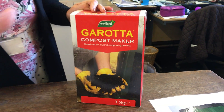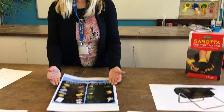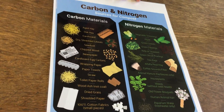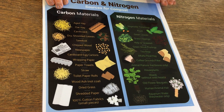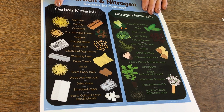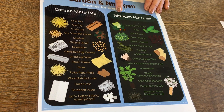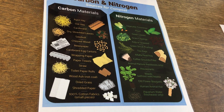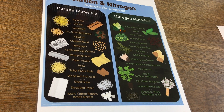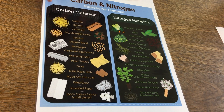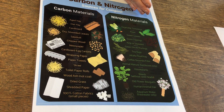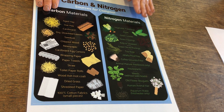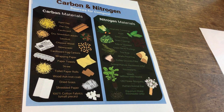That's our equipment. Now we need our ingredients, which we can split into two categories: browns and greens. Browns are very high in carbon, and greens are very high in nitrogen. The ideal carbon-to-nitrogen ratio is between 15 to 1 and 30 to 1 — the RHS states either 15 to 1 or 30 to 1, so anything within that range.